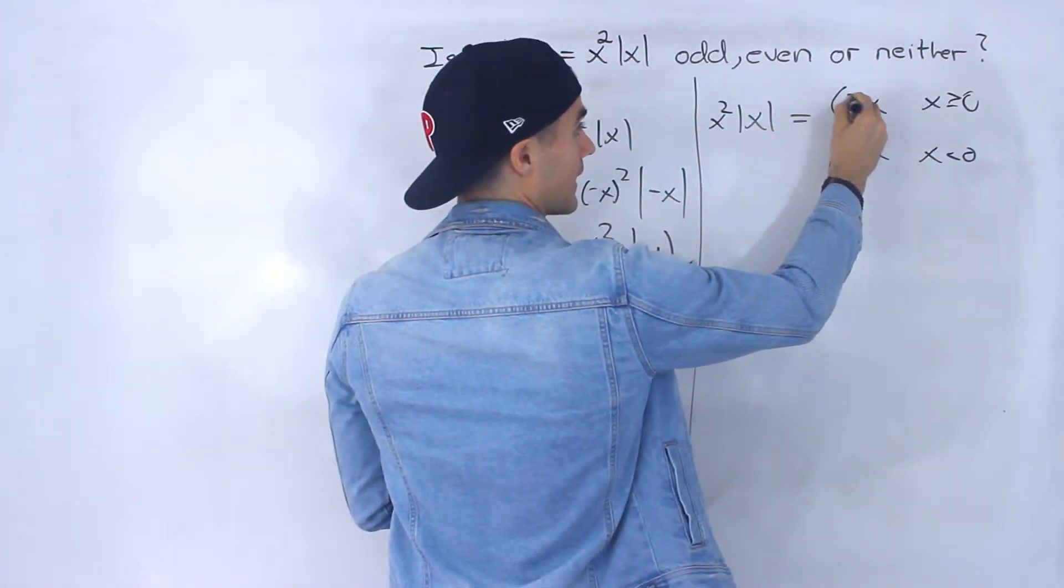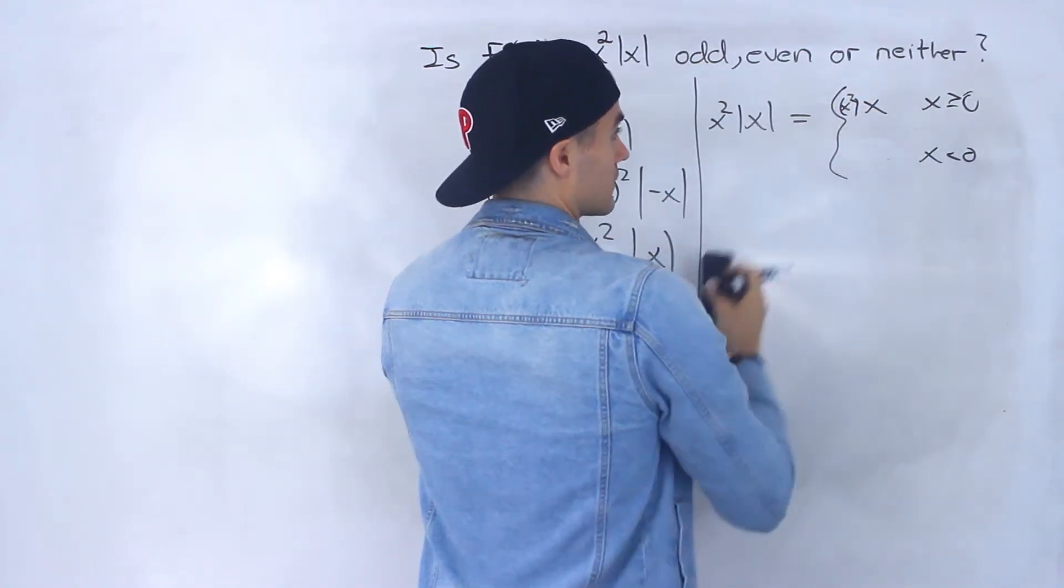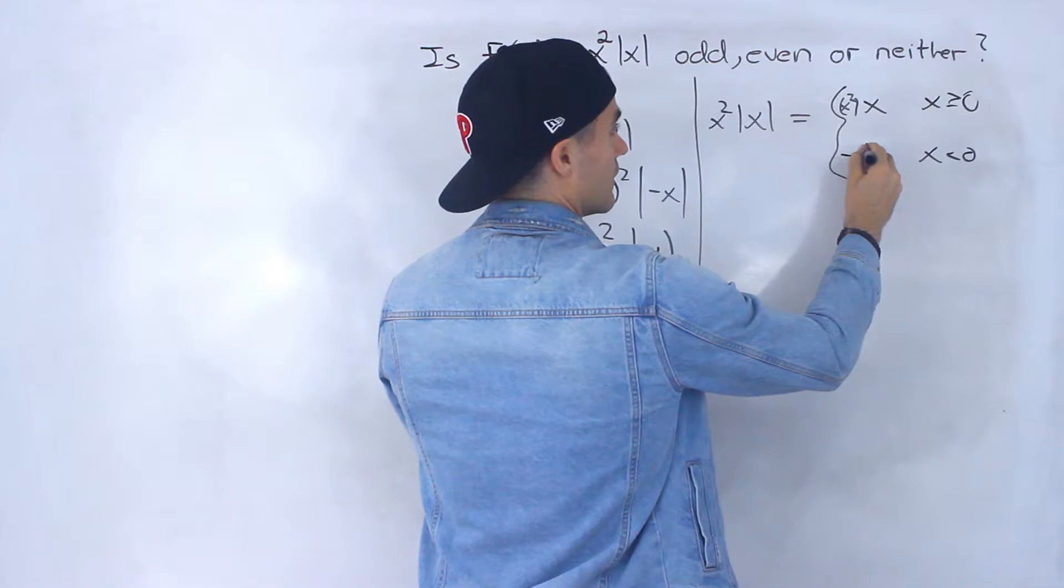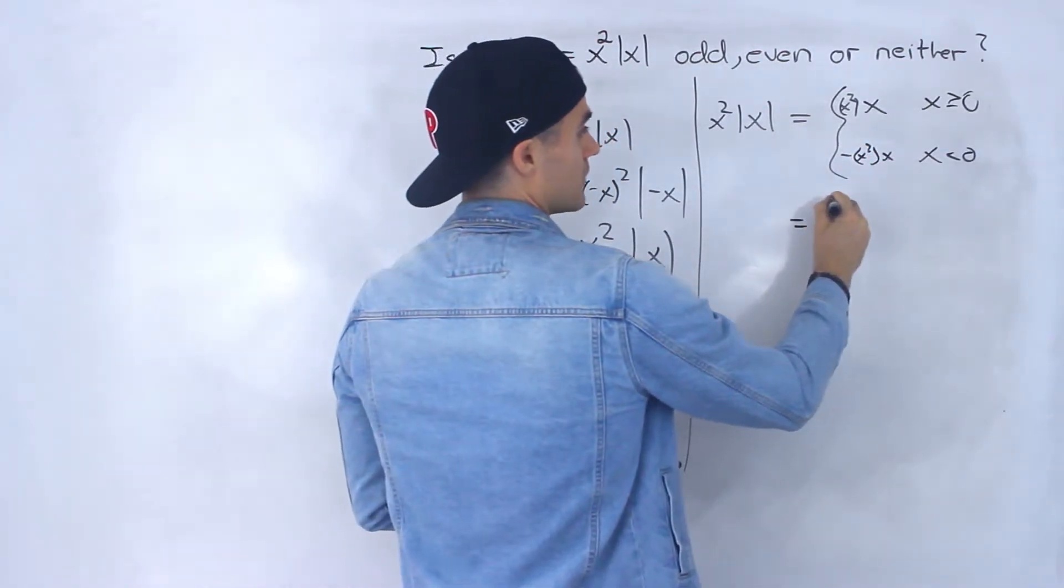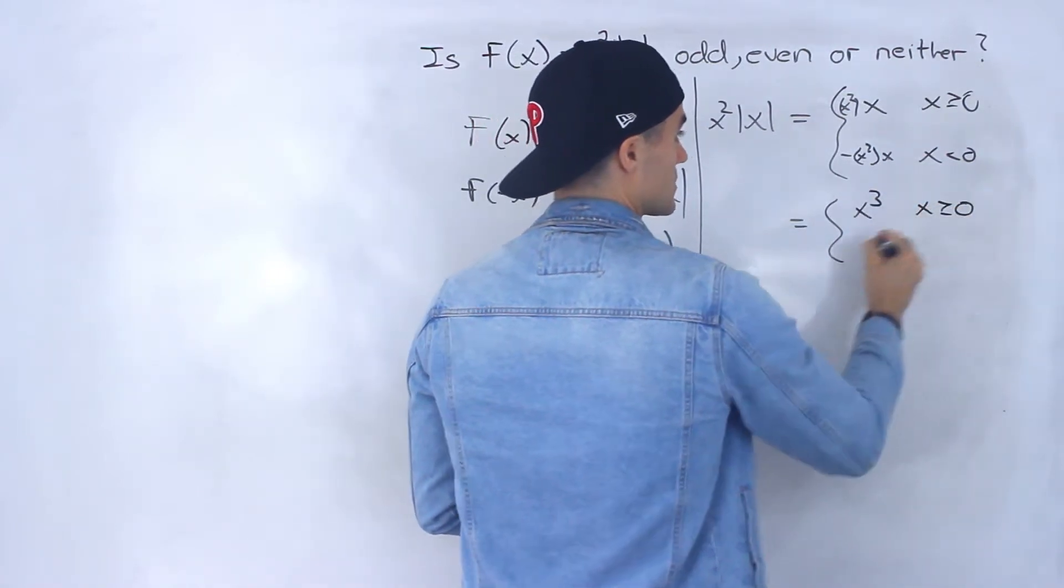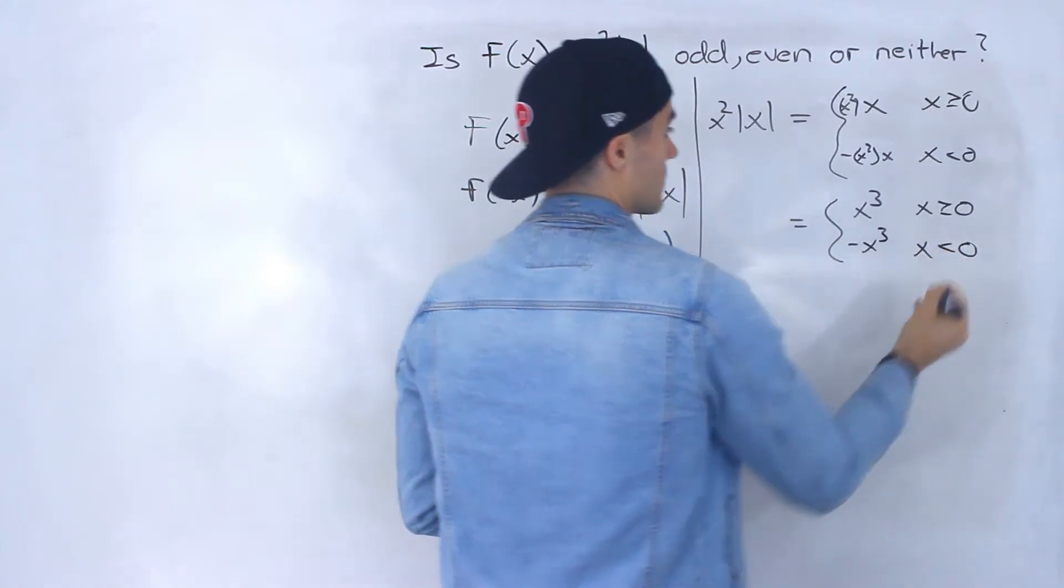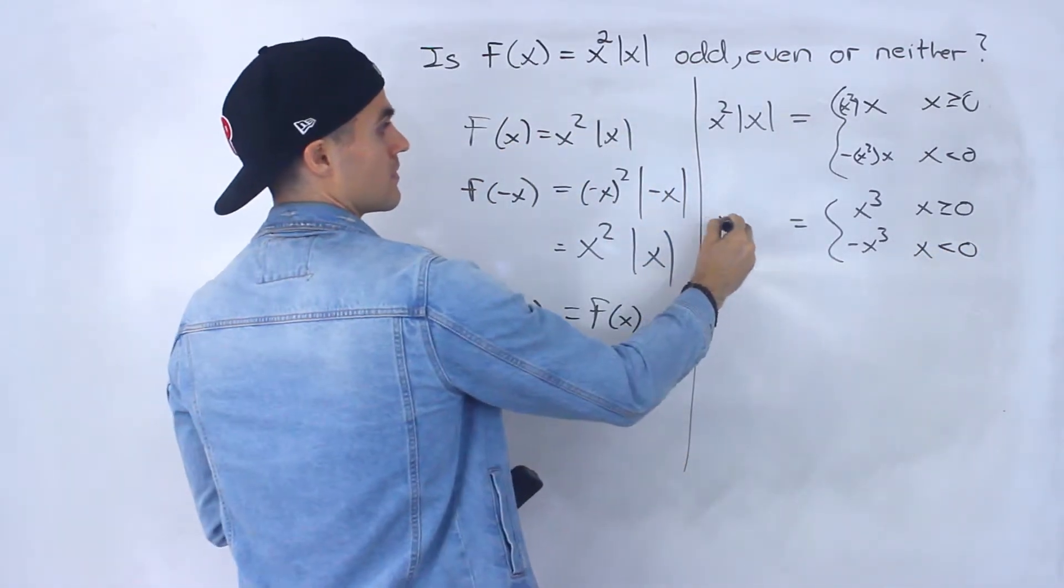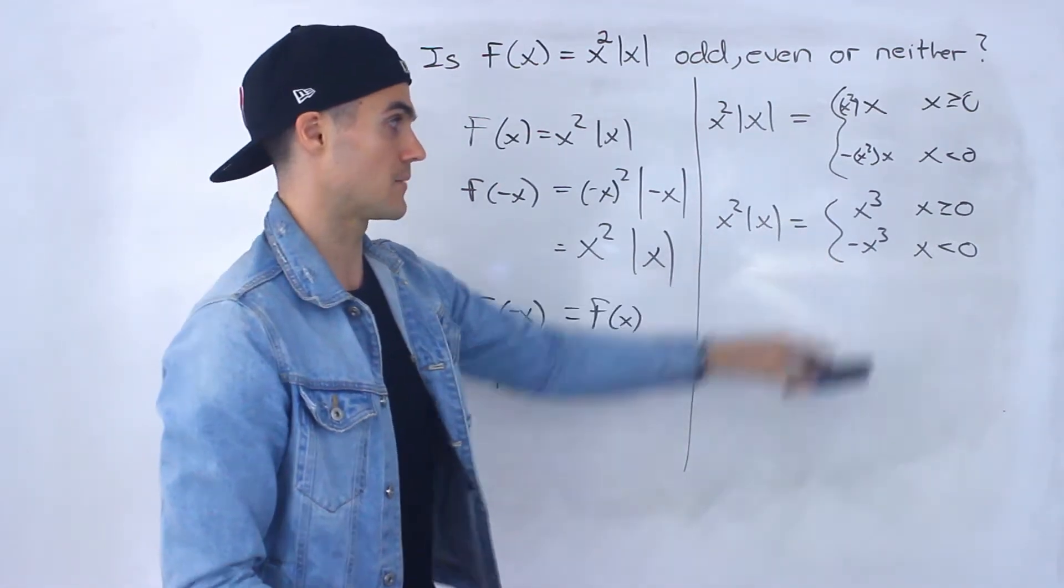if we add this x squared, well, we're going to add an x squared here, then we're going to add an x squared there as well. So this is going to end up being x to the power of three when x is greater than or equal to zero and negative x to the power of three when x is less than zero. This function ends up being that piecewise function there.